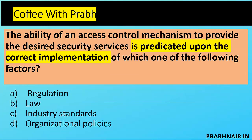Fourth coffee shot: the ability of an access control mechanism to provide desired security services is predicted upon the correct implementation of which one of the following factors? As a security architect implementing access control, we need to consider multiple factors — regulation is mandatory, law is important, industry standards are important, and organizational policy is important. The keywords are 'correct implementation' and 'predicted upon' — meaning it depends on something specific.